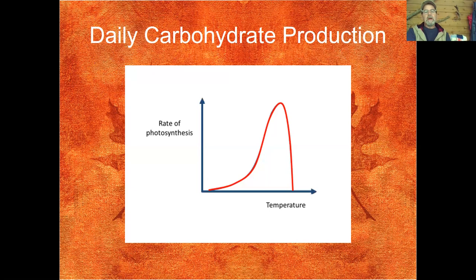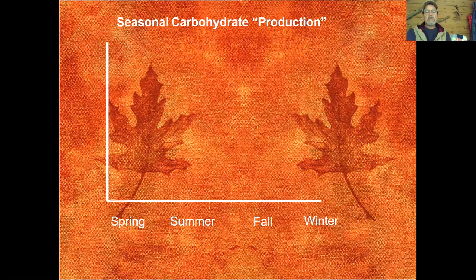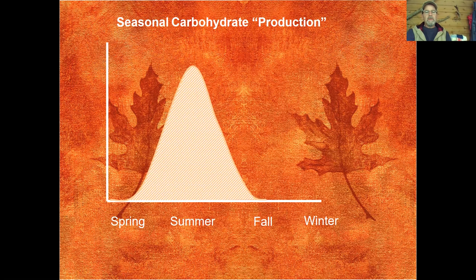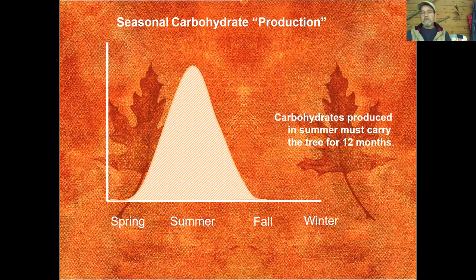This is just a relative graph giving you a general idea of the point I'm trying to make. The rate of photosynthesis increases to a point as temperature increases — it kicks in during spring and early summer — but as temperatures get too high, whether during an entire month or certain times of the day, the photosynthesis rate crashes and it affects the amount of food a tree can produce. Seasonally, carbohydrate production occurs generally during the warmer months, with nothing occurring in the winter months. Carbohydrates produced in summer must carry the tree for the entire twelve months.